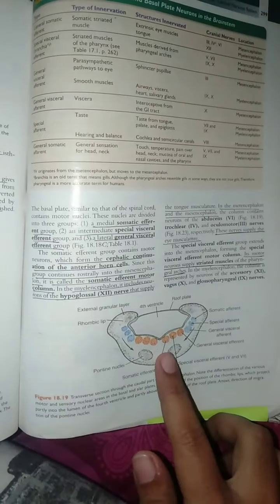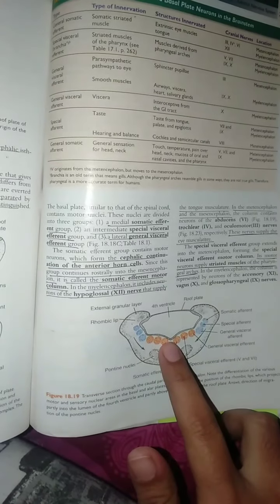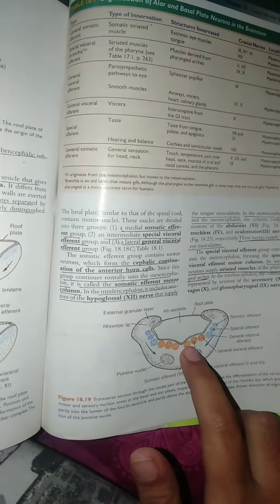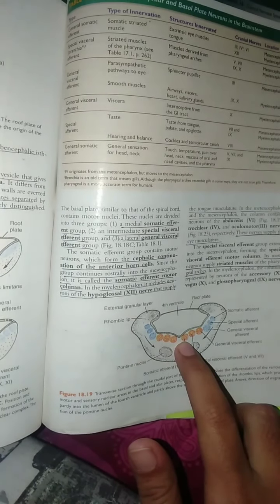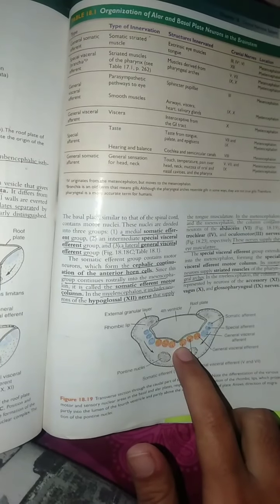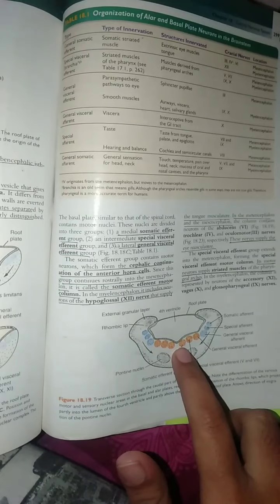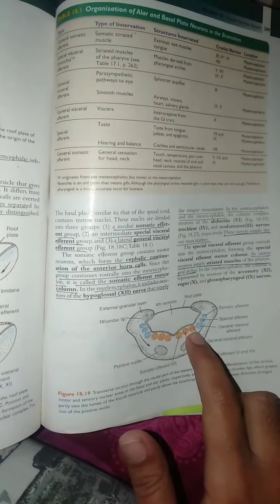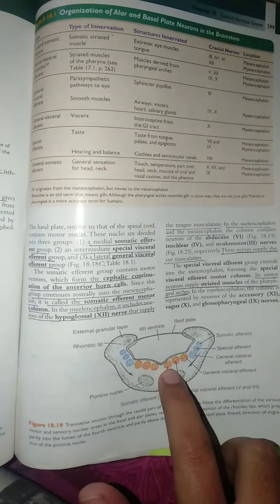The first group is medial to lateral. If we can see here, these are basal plates and these are alar plates. The medial, intermediate, and lateral groups are: somatic efferent, special visceral efferent, and general visceral efferent. The somatic efferent is present medially.